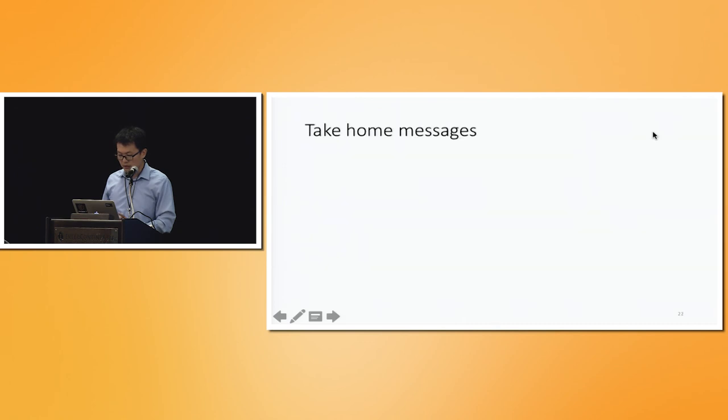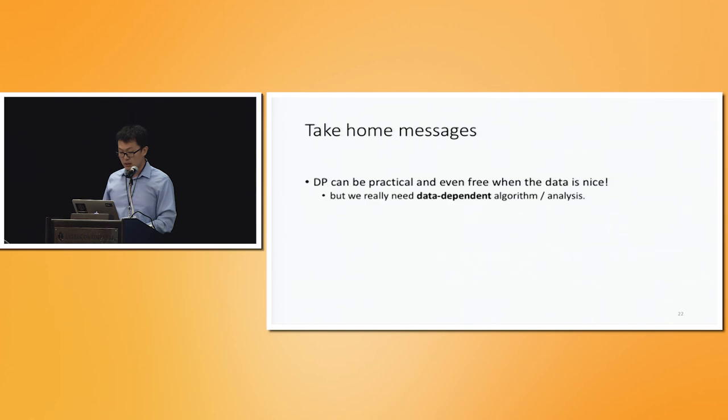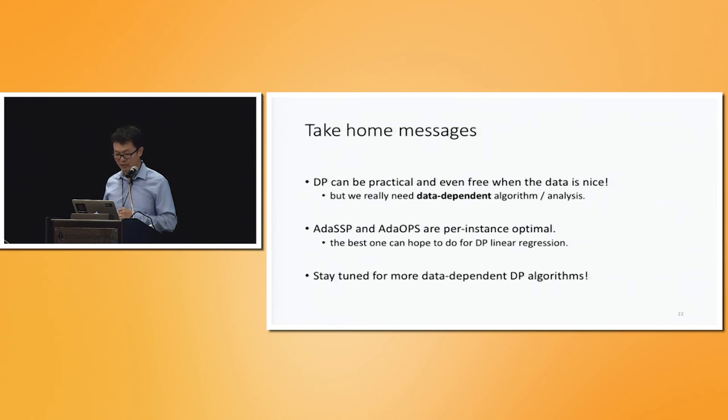All right. So let me fast forward to the end. Take-home messages. So unlike what you might have been told, differential privacy can be a very practical technology and can be the actual solution to the privacy challenges that we face as a society. And it can even be free as we demonstrated when the dataset is nice. But what we really need to have is a data-dependent algorithm and analysis for these algorithms so we can get the best out of the data that we have. And the two proposed algorithms are, for instance, optimal. And it's also the best we can hope to get for the problem of differentially private linear regression.